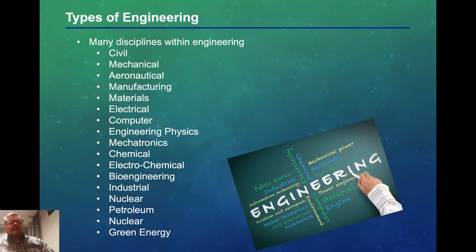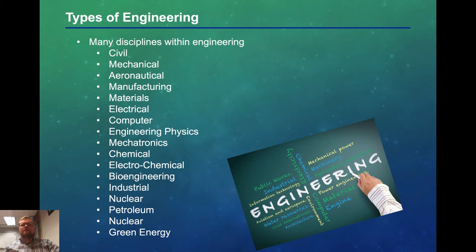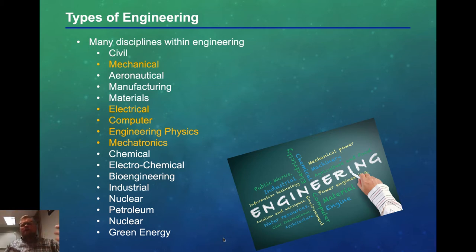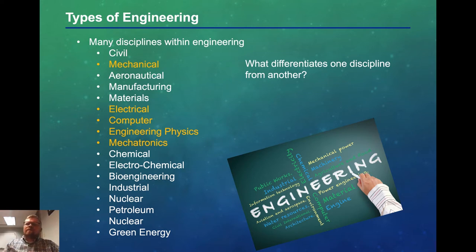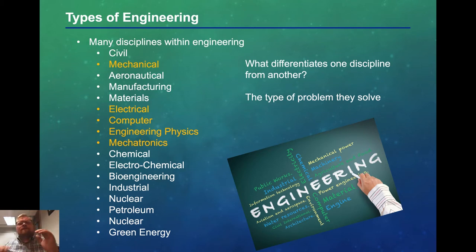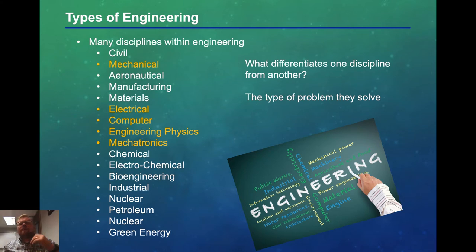Here is a non-exhaustive list of different types of engineering. There are so many disciplines within engineering: civil, mechanical, aeronautical, manufacturing materials, electrical, computer, mechatronics, engineering physics — I could go on. Those that I'm highlighting are those which are present at my university. But what differentiates one discipline from another? Well, the answer is the type of problem they solve. The skills required of a mechanical engineer versus an electrical engineer versus a computer engineer depends entirely on whatever type of problem they are trying to solve.